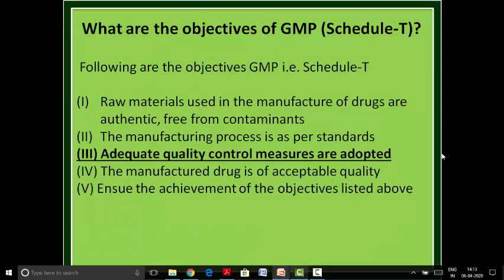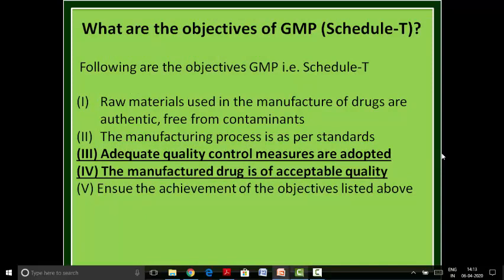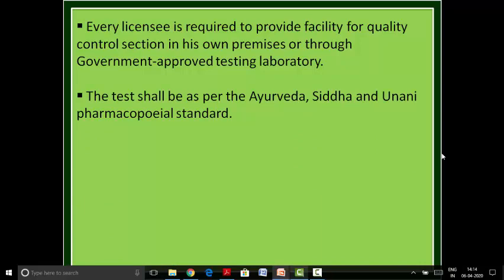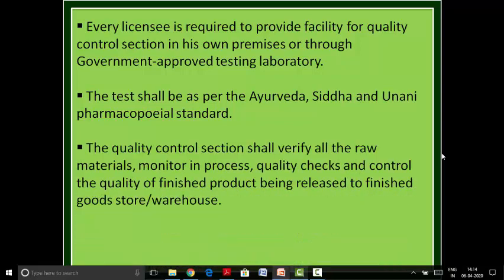The next objective is that adequate quality control measures are adopted and the manufactured drug is of acceptable quality. Every licensee is required to provide a facility for a quality control section in their own premises or through a government-approved testing laboratory. The tests shall be as per Ayurveda, Siddha, and Unani pharmacopeial standards. The quality control section shall verify all raw materials, monitor in-process quality checks, and control the quality of finished products being released to the finished goods store or warehouse.